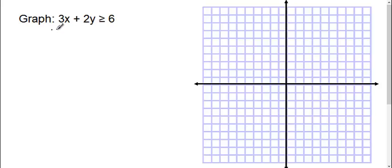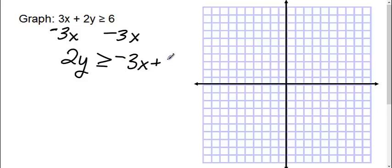So I need to get everything on the other side but my y. So first I'm going to subtract 3x on both sides. So I get 2y is greater than or equal to negative 3x plus 6.